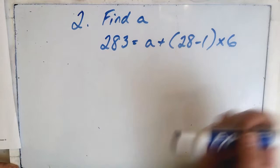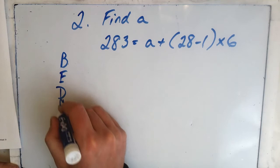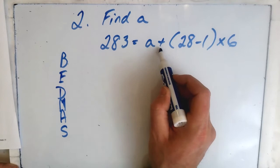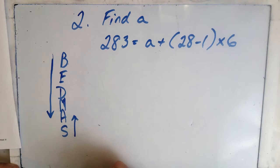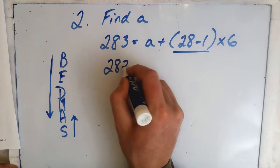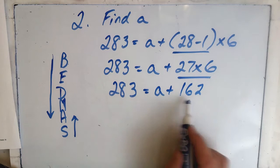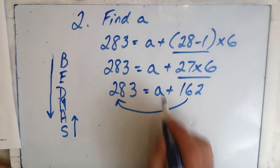Question two: we're given the formula with all the numbers inside, and we have to work through it. We focus on BEDMAS and go as far as we can. We're going to get stuck at the A, which is next to the plus sign — that tells us to do BEDMAS until addition, then switch. First up: brackets.